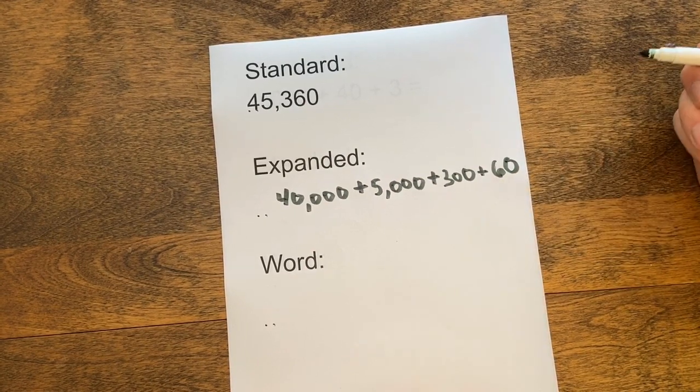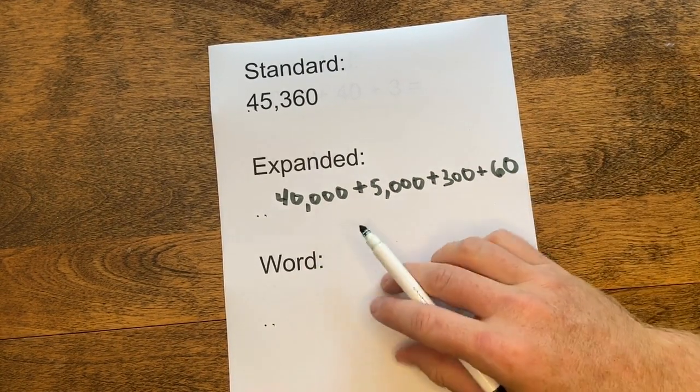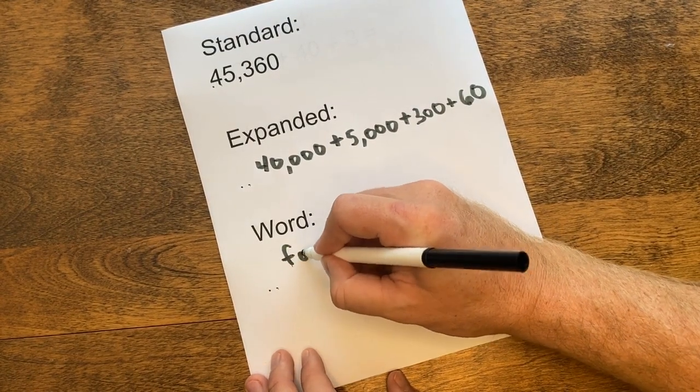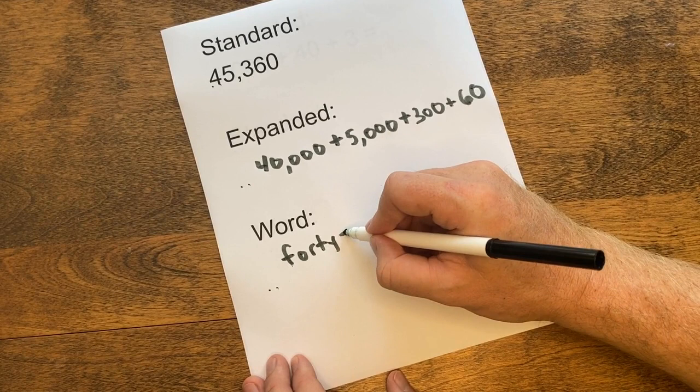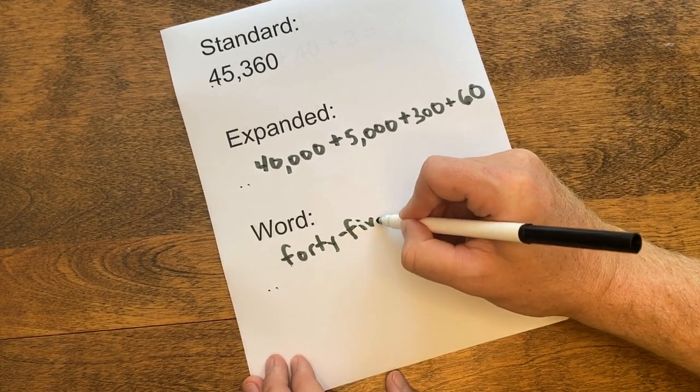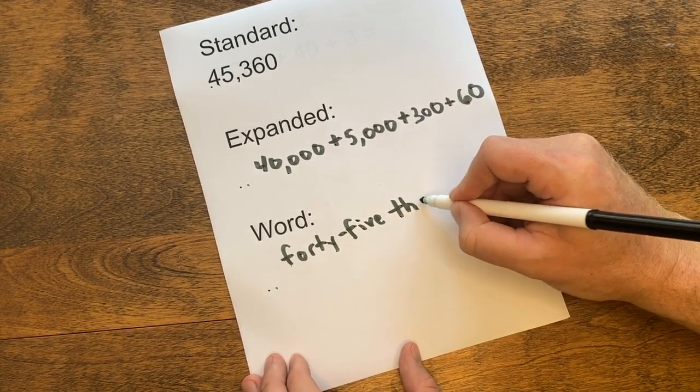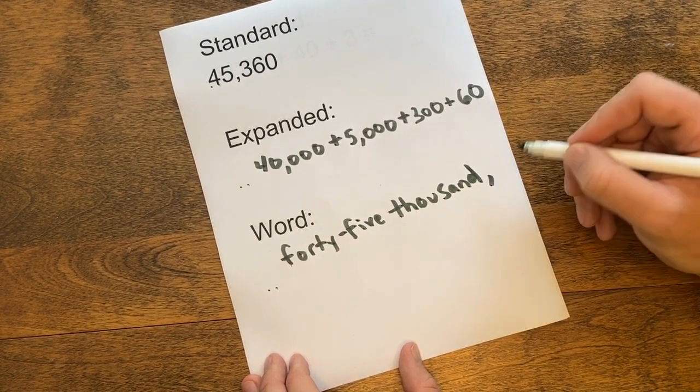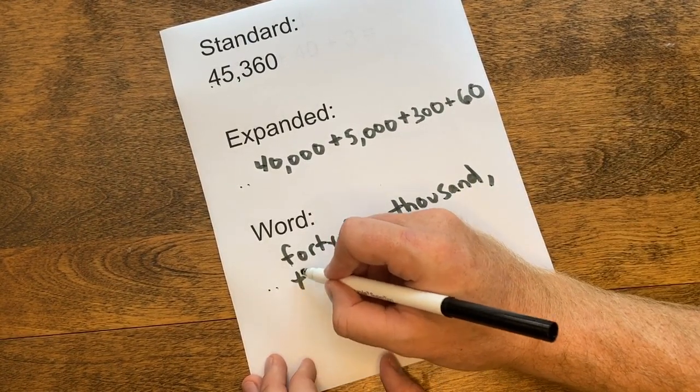And we don't need the zero because there's nothing there. For word form, we write out the number using words. So we have 45,000, and I'm going to put a comma here just like the standard form number has a comma, 360.